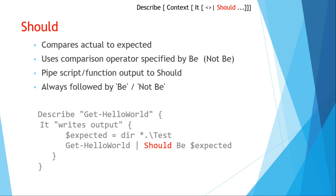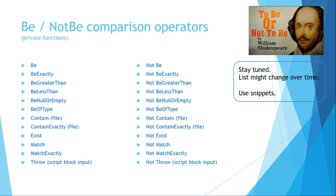Should is not a container — it's actually a function. It compares actual to expected values. You always pipe to it, and it does the comparison based on the 'Be' operator that follows it. These are all the wonderful comparison operators — they change, so keep an eye on them. Not all of them are documented; for instance, 'Be of type,' which I use frequently, is not documented. Learn these and use them — they will help you in your tests.